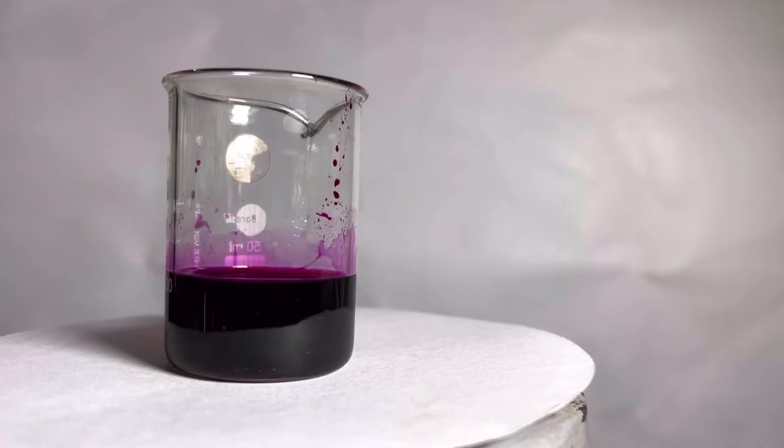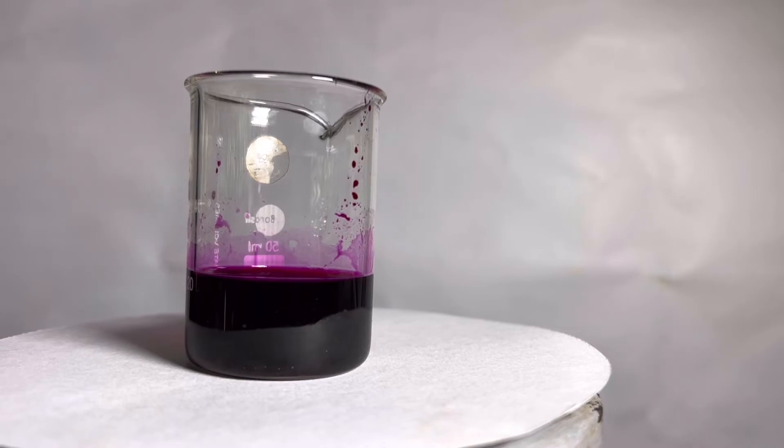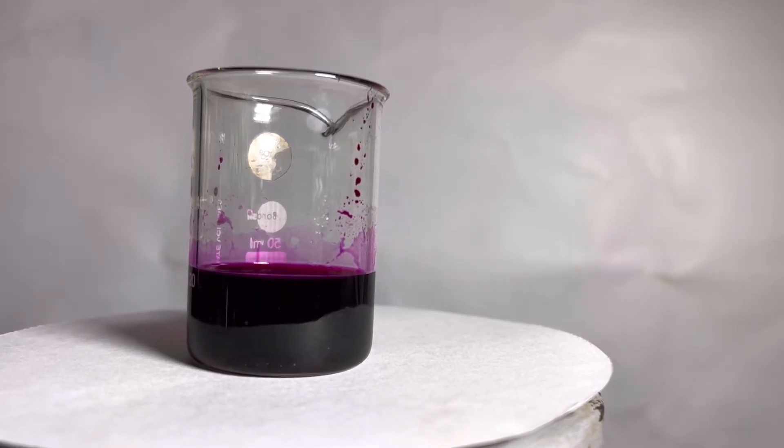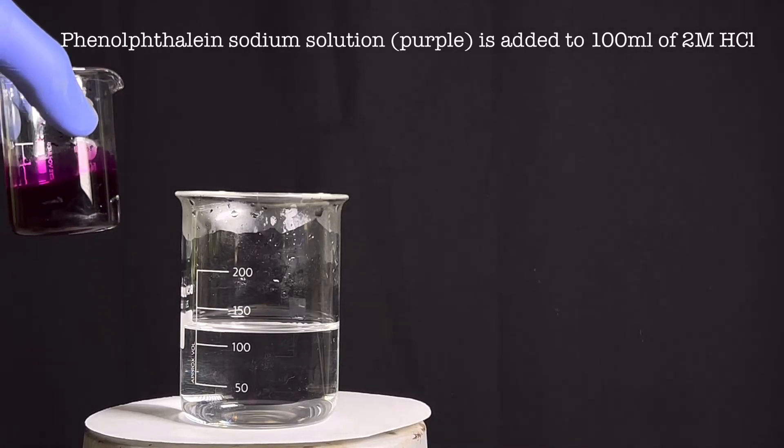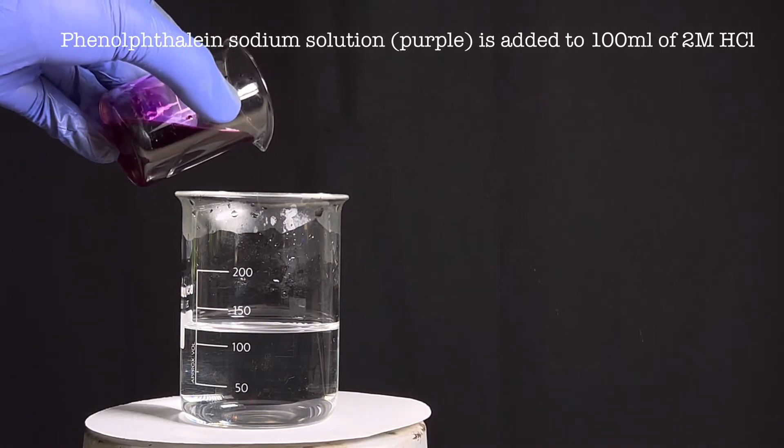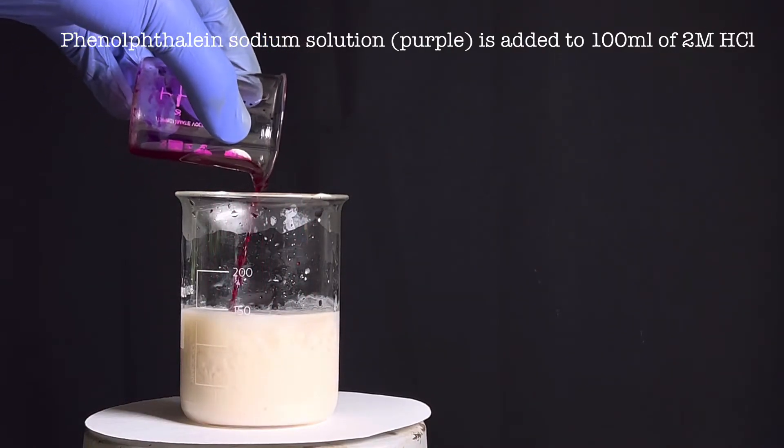Finally we take the aqueous phenolphthalein layer. It has a high concentration of phenolphthalein. The phenolphthalein solution was poured into 100 ml of 2 molar hydrochloric acid. Immediately the salt form is converted back into its original form and it crashes out as a white precipitate.